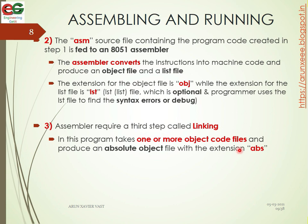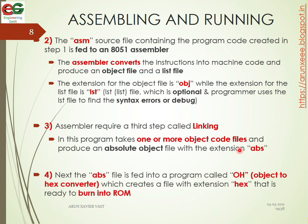The next step is converting the .abs file into a hex file. The .abs file is fed into a program called OH — which stands for Object to Hex. OH software converts the absolute object file into a hex file with the extension .hex. This .hex file is ready to be burned into ROM.